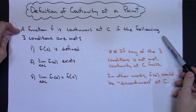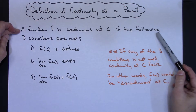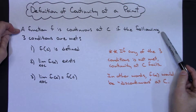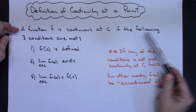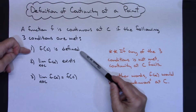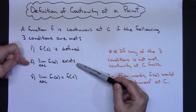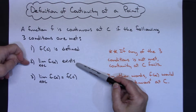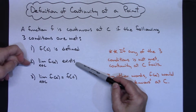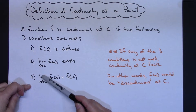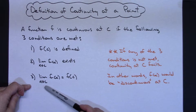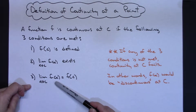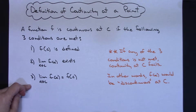The function f is continuous at c if the following three conditions are met. Number one, f of c is defined. Number two, the limit as x approaches c of f of x exists. And the third condition, the limit as x approaches c of f of x has to equal f of c.